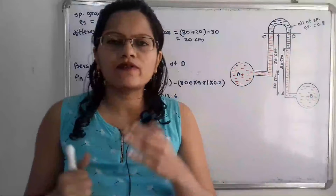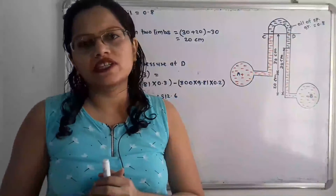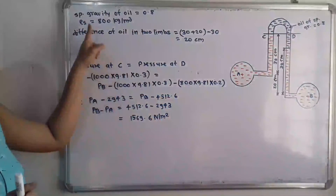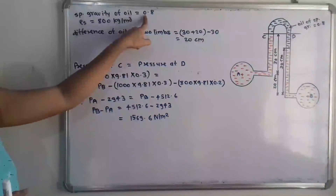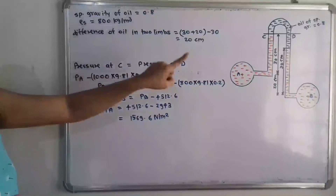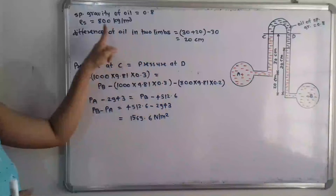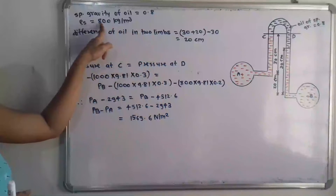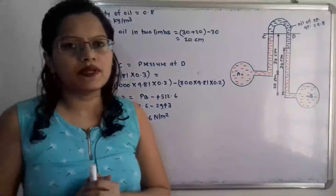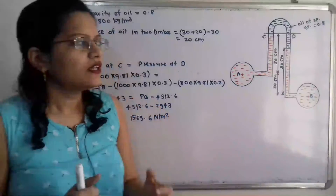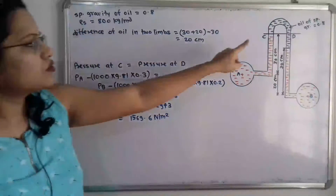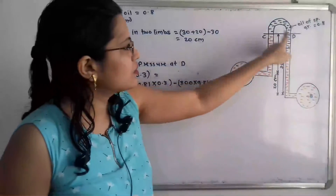From the specific gravity of oil we can calculate the density. The density equals the specific gravity multiplied by 1000, which gives 800 kilograms per meter cube.